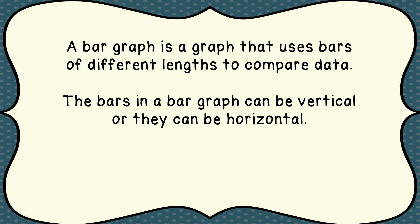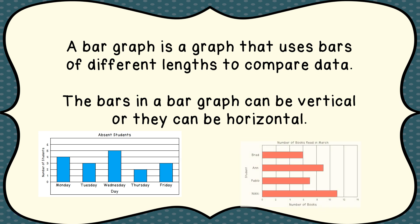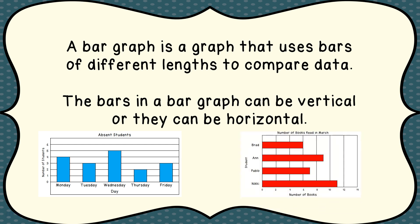A bar graph is a graph that uses bars — hence the name — of different lengths to compare data. The bars in a bar graph can be vertical, meaning going up and down, or they can be horizontal, meaning they go from side to side. Either way, they help to represent the data that we're trying to give to people, and it's an easy way to organize and display that data.